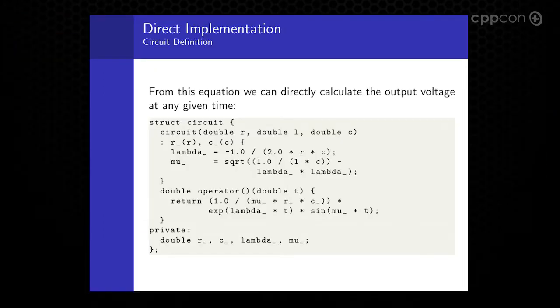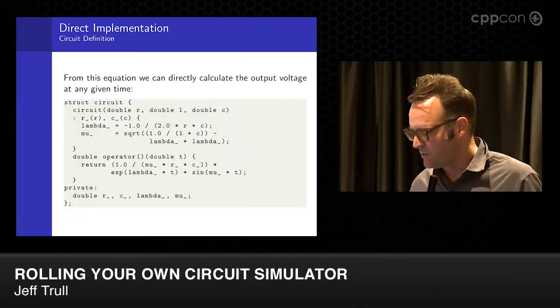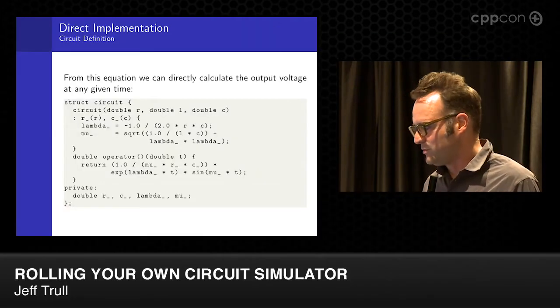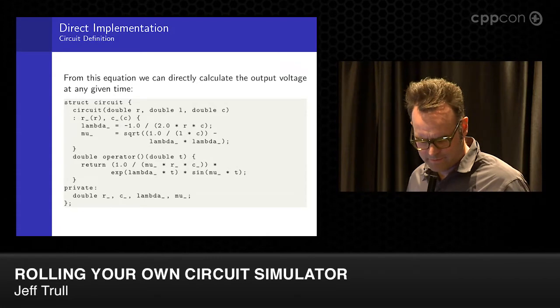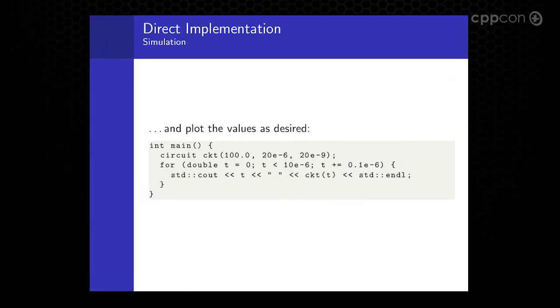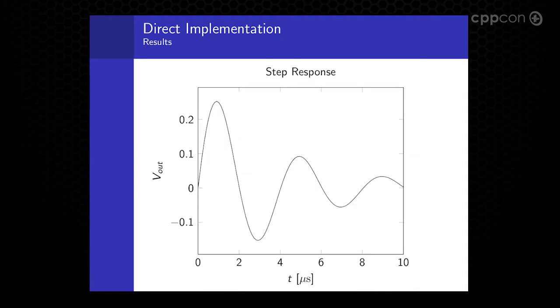We can simulate this by simply implementing that equation. We construct a circuit as a function object: you supply the time and it returns the output value at that time. That's one way of solving this. Plotting out the results, it looks like this — you get a square wave input in and it kind of rings.